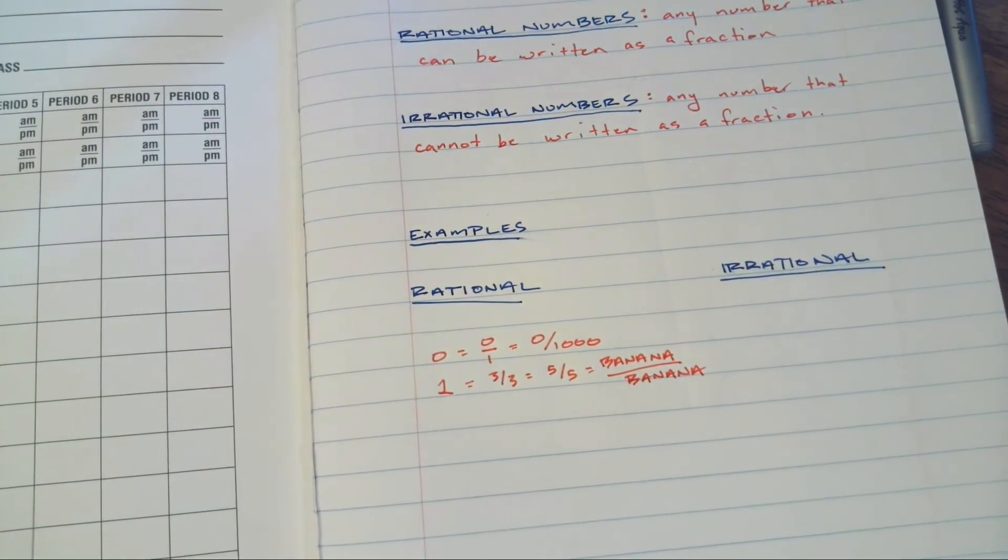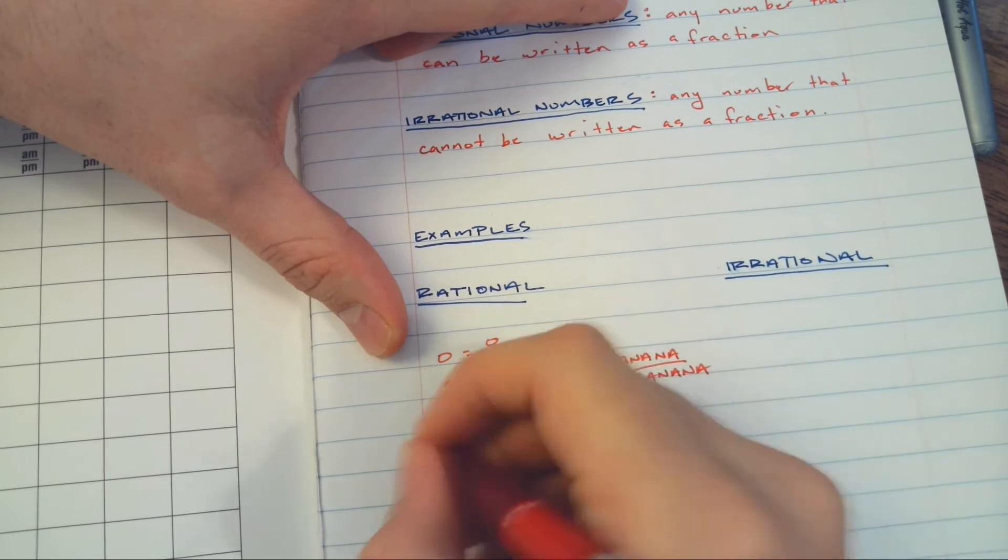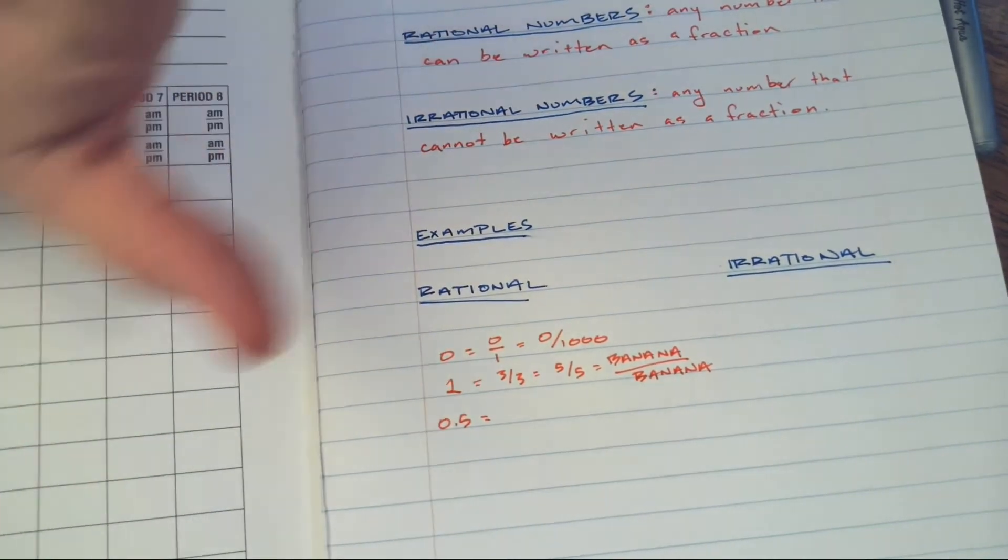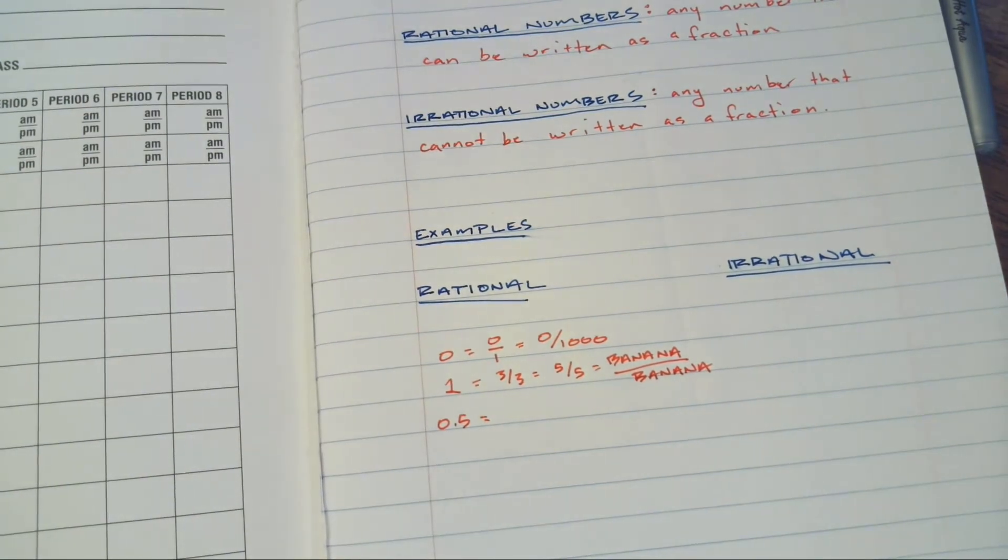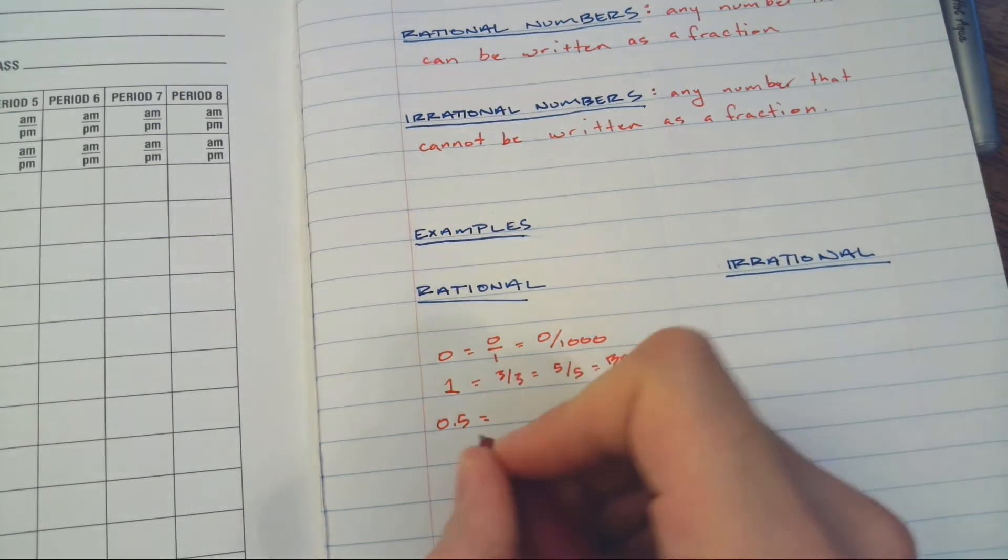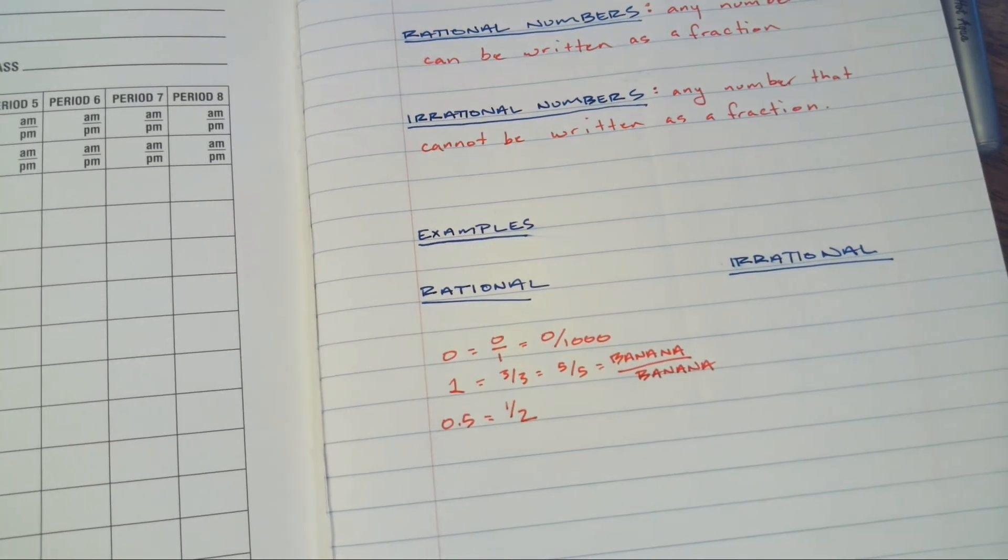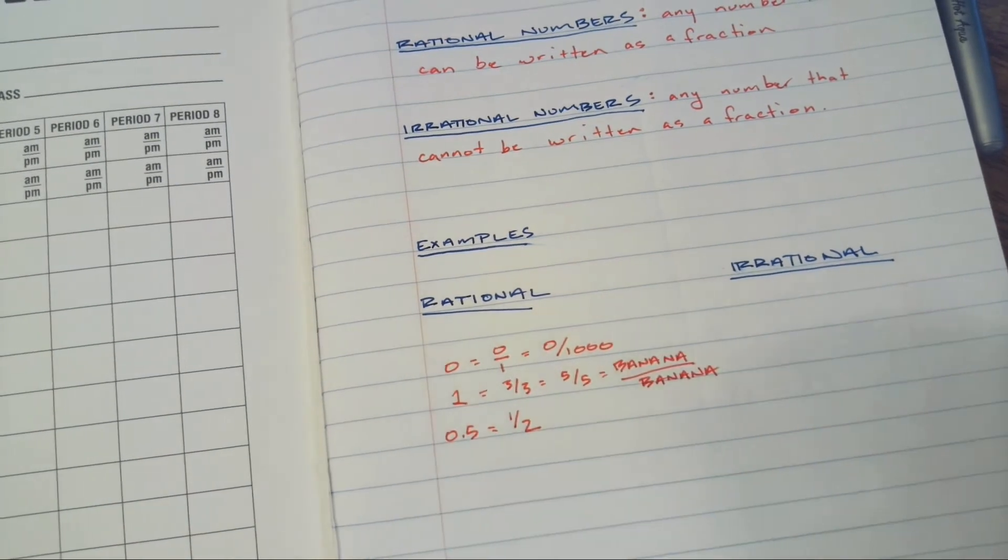So now this is where things start to branch off and get a little more complicated. Okay, so let's take a look at 0.5. This is - and I said a little more complicated, it's not much. 0.5 is a decimal. Well, decimals are just another way to write a fraction. 0.5 is the same thing as one-half.